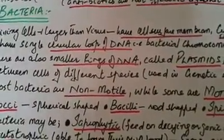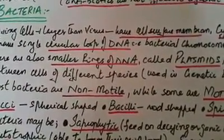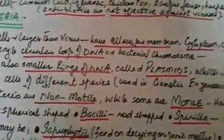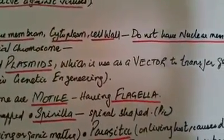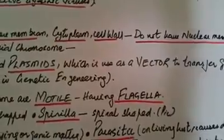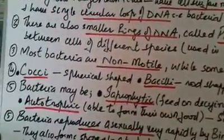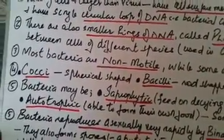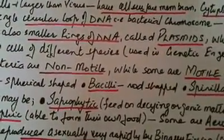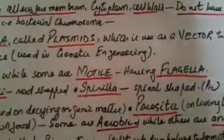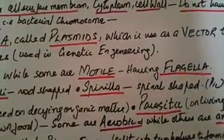Most bacteria are non-motile and are not able to move, while some species are motile. If they are motile, they have a specialized structure called flagella. There are different shapes of bacteria: if they are spherical, they are called cocci; if they are rod-shaped, they are called bacilli; and if they are spiral-shaped, they are called spirilla.